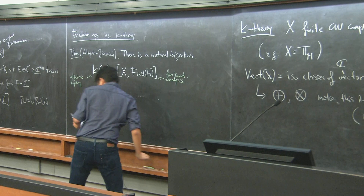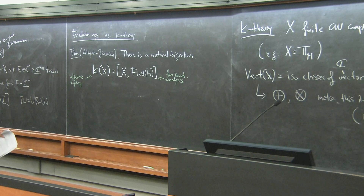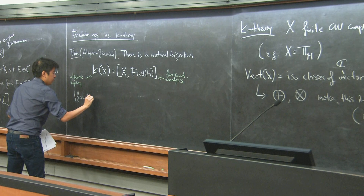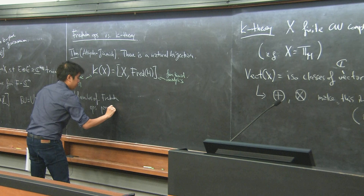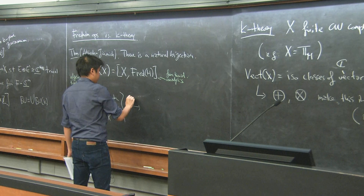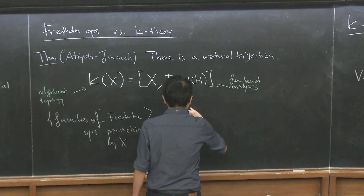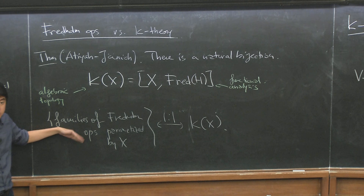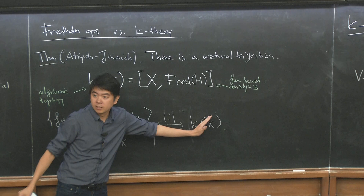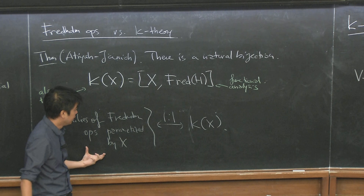In particular, families of Fredholm operators parameterized by X are in bijection with K-theory of X. Our goal later will be to study families of Dirac operators parameterized by some space — the torus — and that gives us naturally an element in the K-theory of the torus.